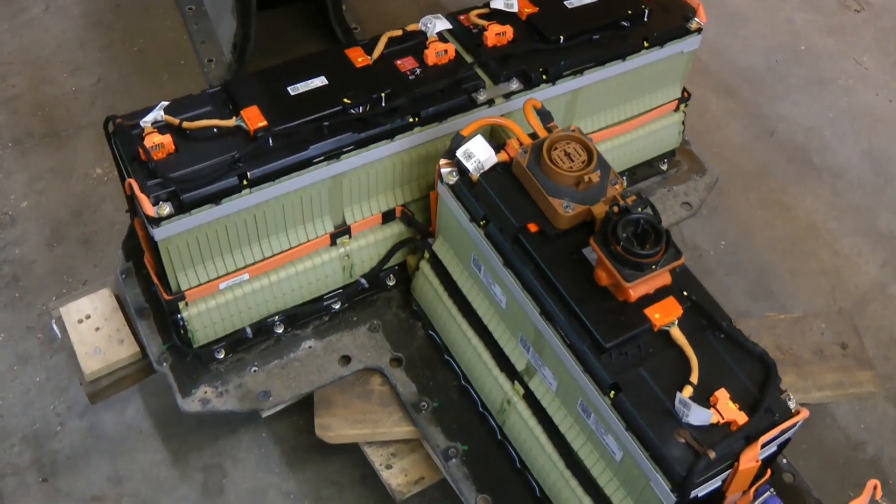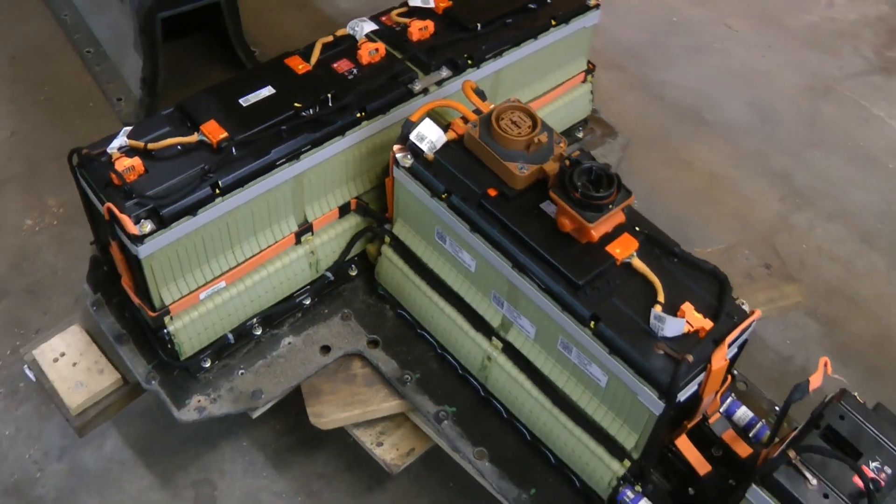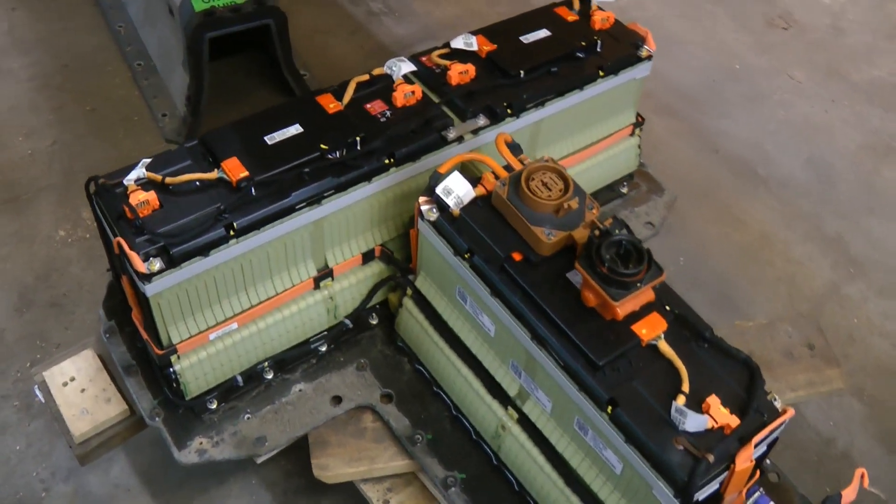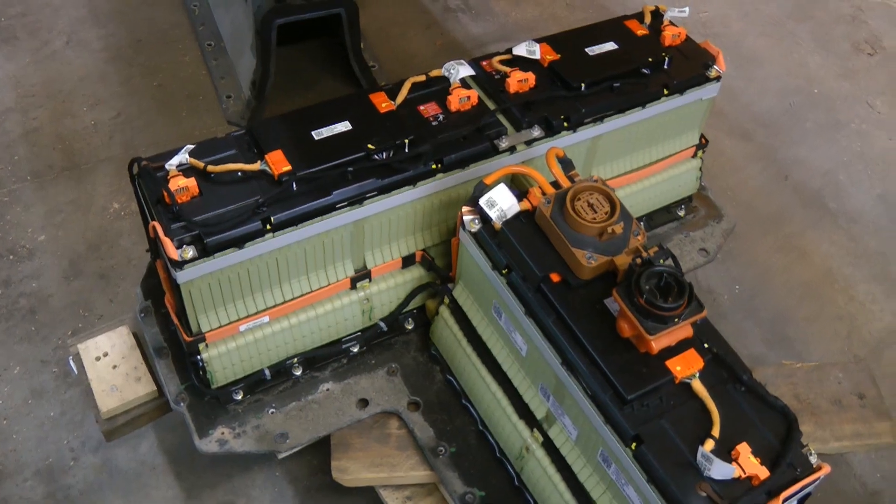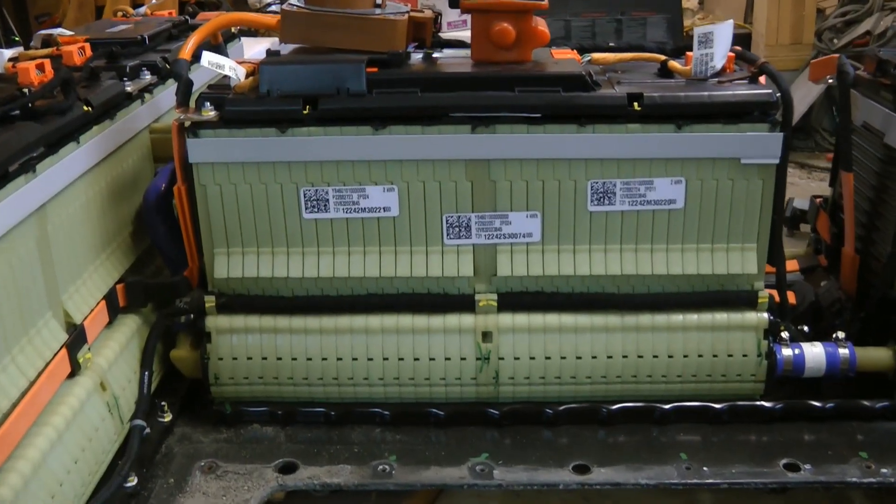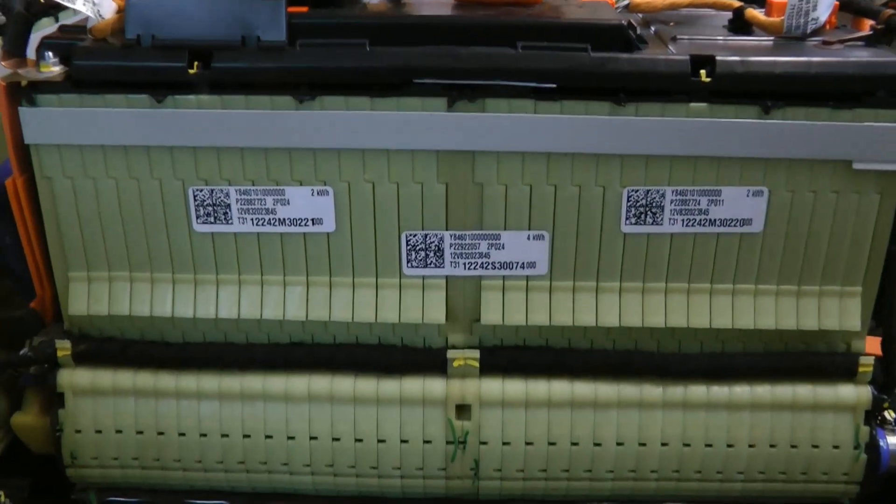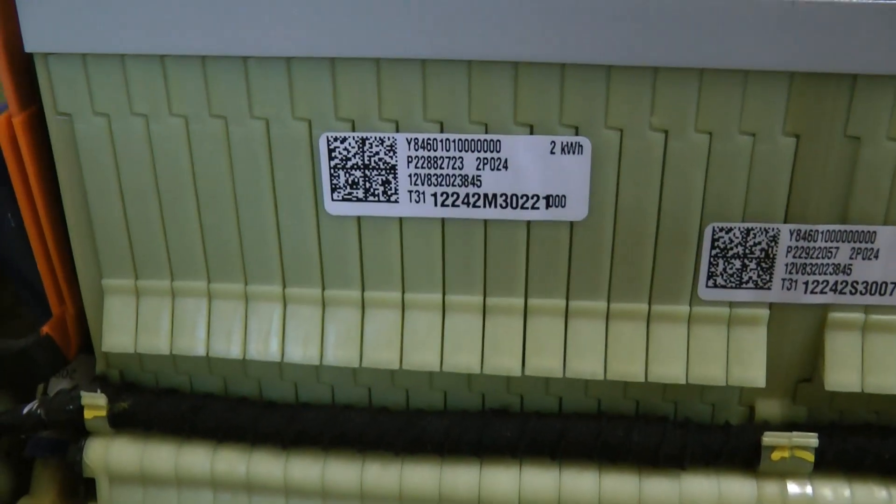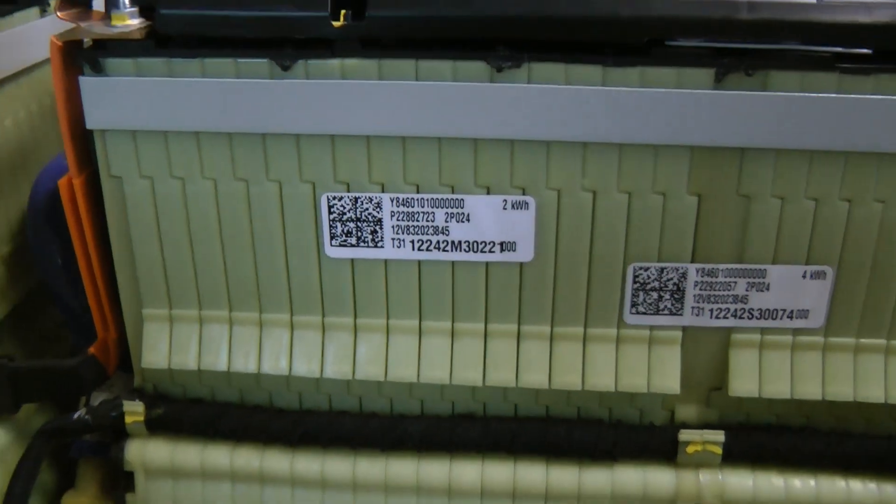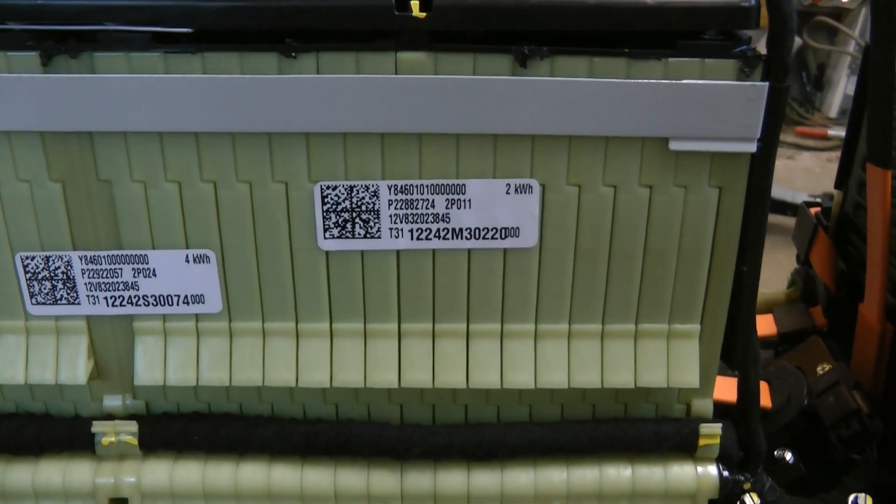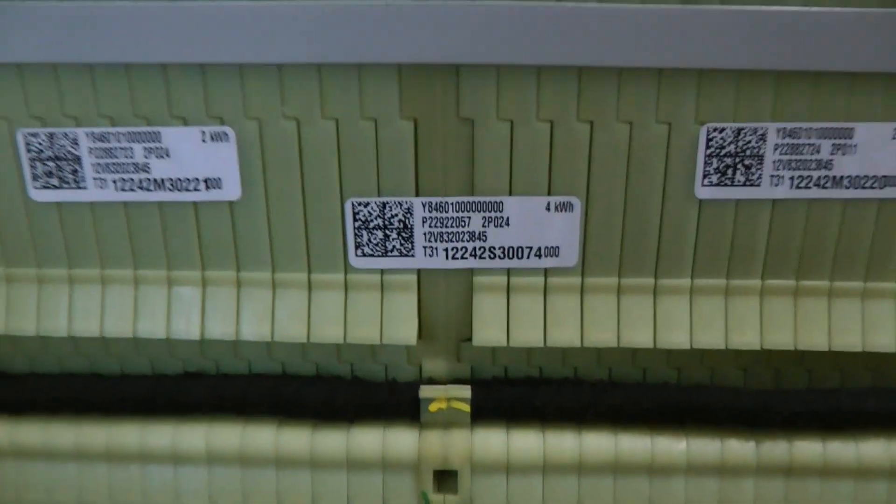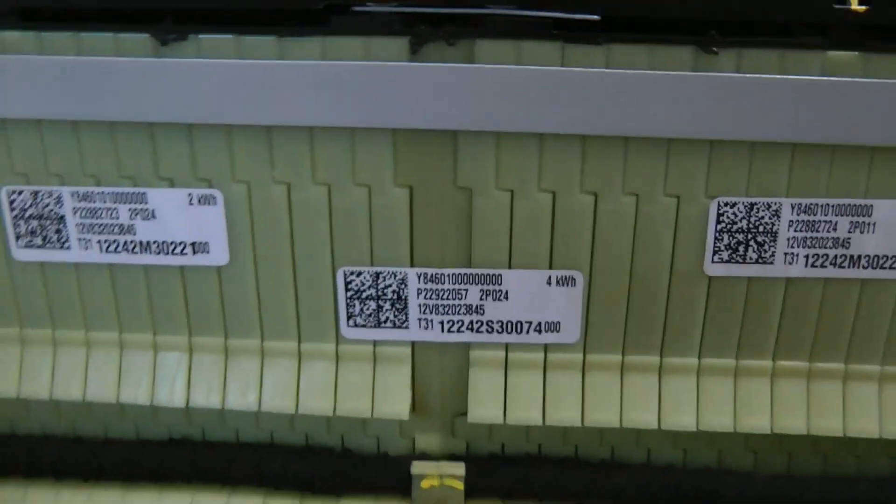Very briefly, the Chevy Volt battery is a total of 360 volts. It's generally broken up into 48 volt sections. For instance, this is two 48 volt sections. You can see there's one, and this is a 2 kilowatt hour chunk there, 48 volts. Another 2 kilowatt chunk. And then that totals 4 kilowatts.